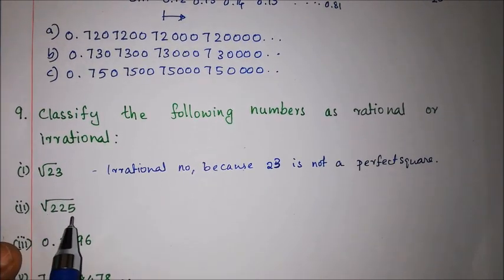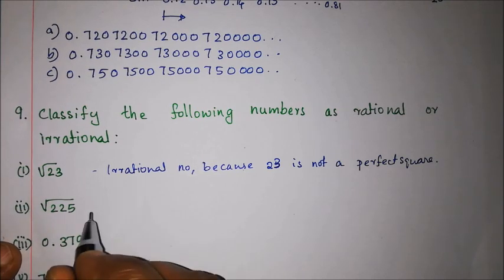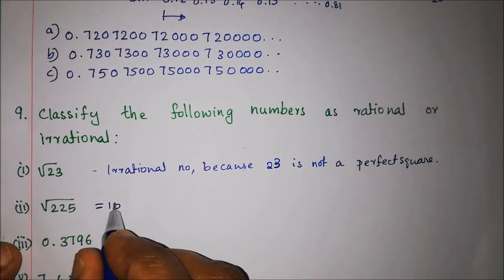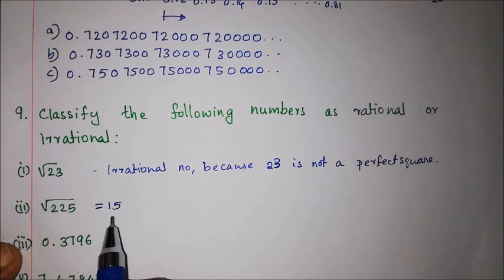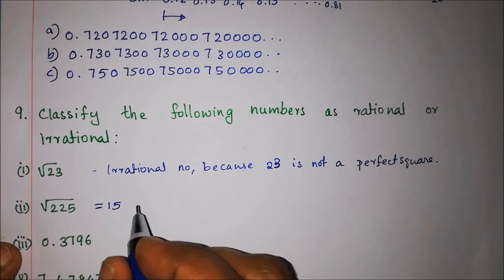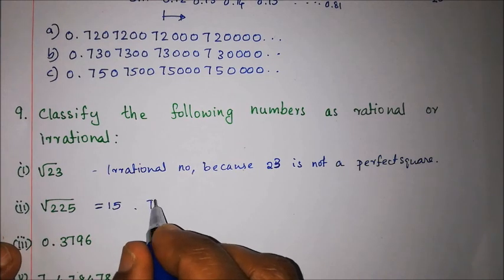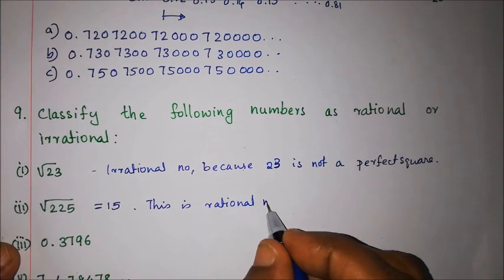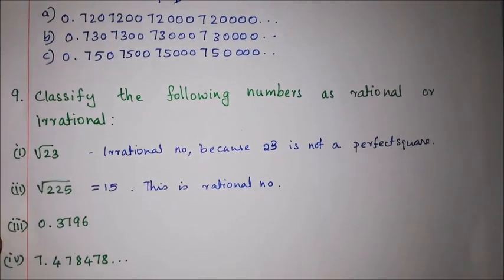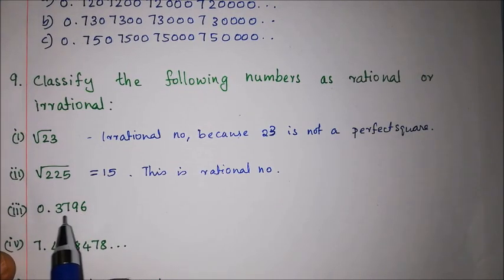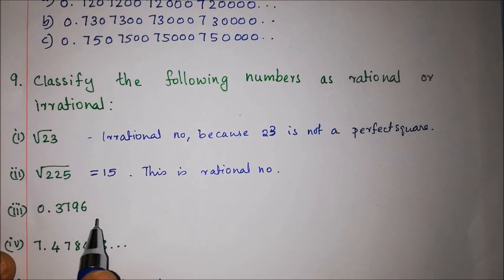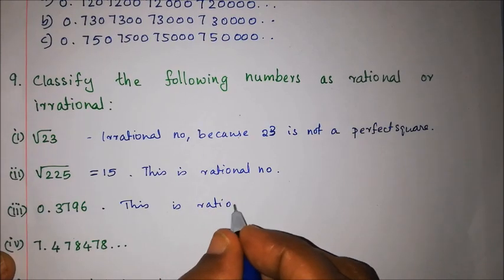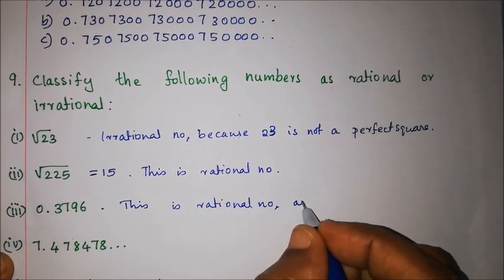Square root of 225: 225 is a perfect square. 15 squared is 225, so square root of 225 equals 15. Since 15 is a natural number, it is a rational number. Next, 0.3796 — it is a terminating decimal, so it is a rational number.